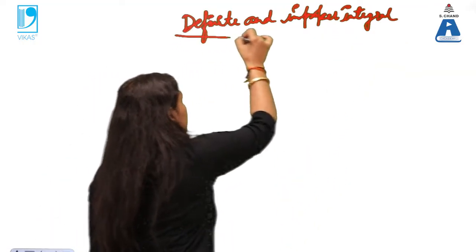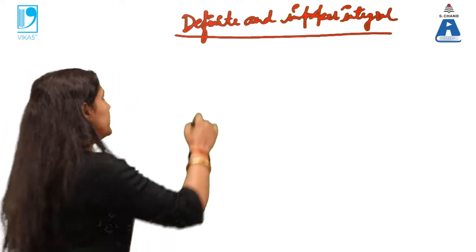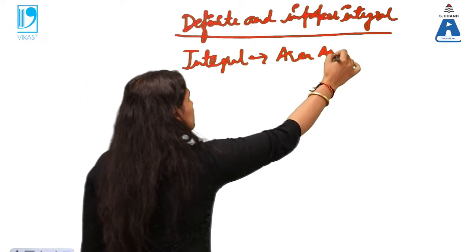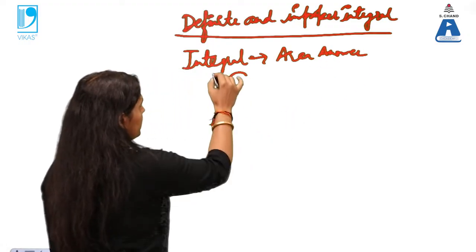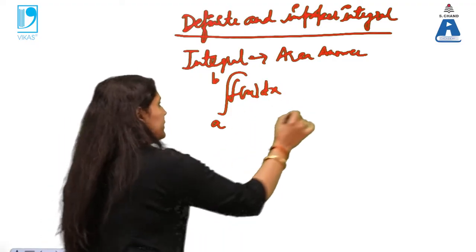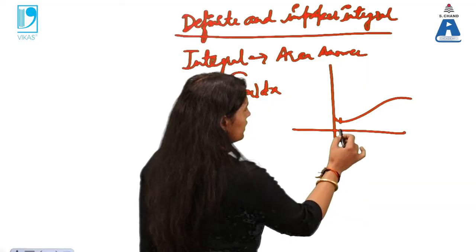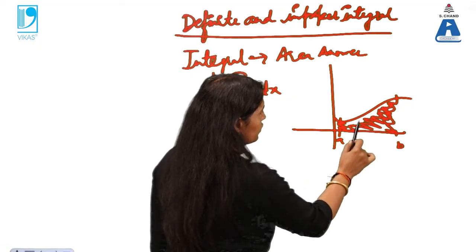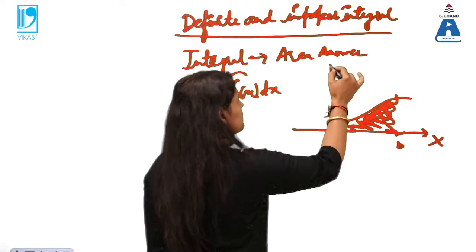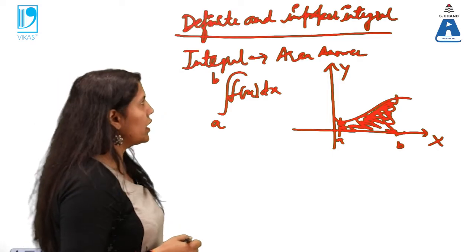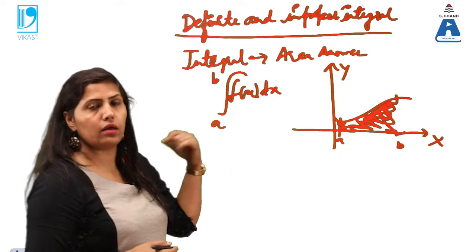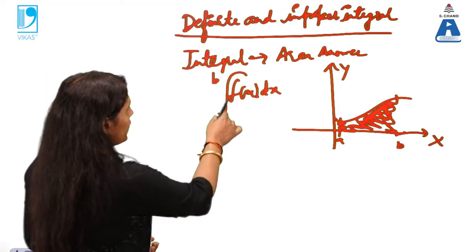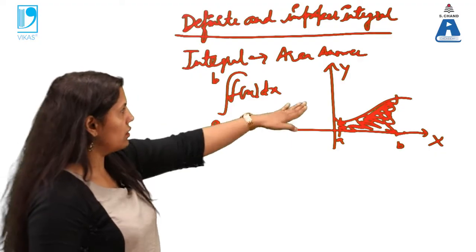You should know what integration gives you. An integral's answer is basically area. If you are evaluating the integral from a to b of any function, it gives you the area under that function — this is your x-axis, this is your y-axis. Integration is connected to area. Double integration is also connected to area, and triple integration is linked to volume. So ∫ from a to b of f(x) dx means the area under the curve.